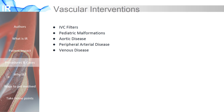One major area of the body where IR physicians do procedures is in the blood vessels. These vascular procedures include the placement of inferior vena cava, or IVC filters, which act as sieves to prevent blood clots from the legs from entering the heart and lungs. IR also helps treat vascular malformations in children. Various abnormalities in the aorta, the artery coming off the heart delivering blood to the body, can be treated by IR. IR doctors also help treat peripheral arterial disease to ensure adequate blood flow to the legs to prevent leg pain, tissue infection, and the need for amputation. Lastly, diseases of the veins, such as varicose veins, can be treated with IR techniques.